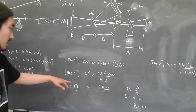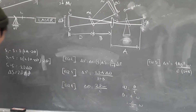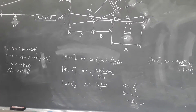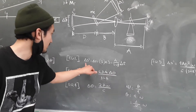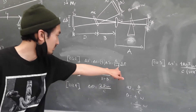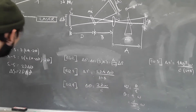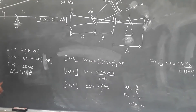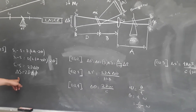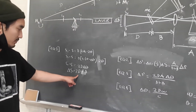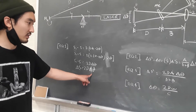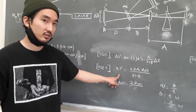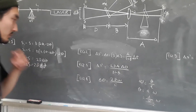Our third step will be to substitute into our equation for delta S prime. We're going to substitute delta S from equation one: two times capital D times delta theta. That's all we're doing in step three — a simple substitution.